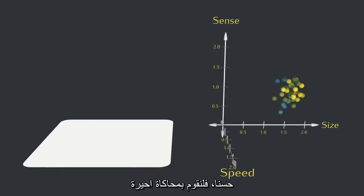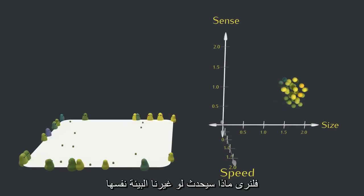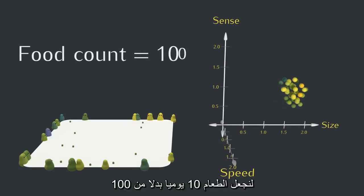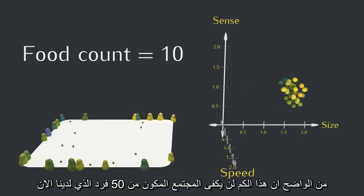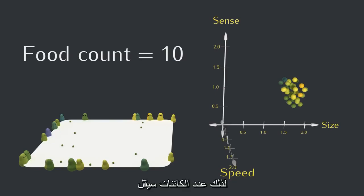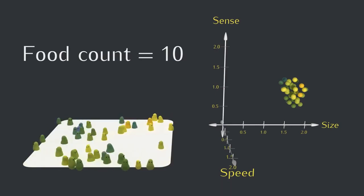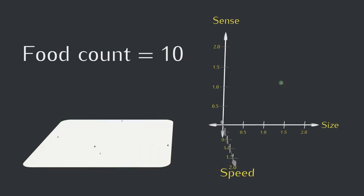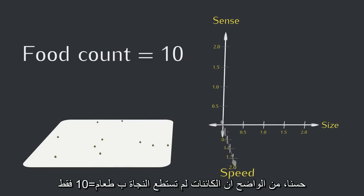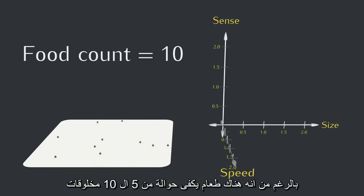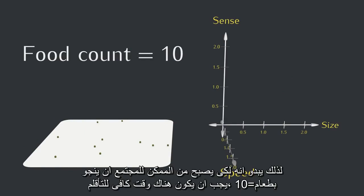Alright, one last simulation. Let's see what happens if we change the environment more explicitly. Let's go to 10 food each day. It's pretty clear that this won't be able to support the population of about 50 creatures we currently have, so the number of creatures will go down. But what else will happen? The creatures that thrived with 100 food just aren't able to cut it with only 10, even though there should be enough for, say, 5 to 10 creatures. So it looks like if it's going to be possible to survive with only 10 food, there's going to have to be some time for the population to adjust.